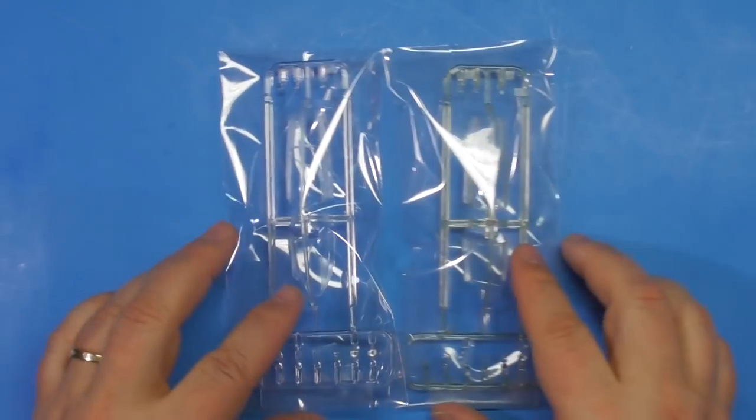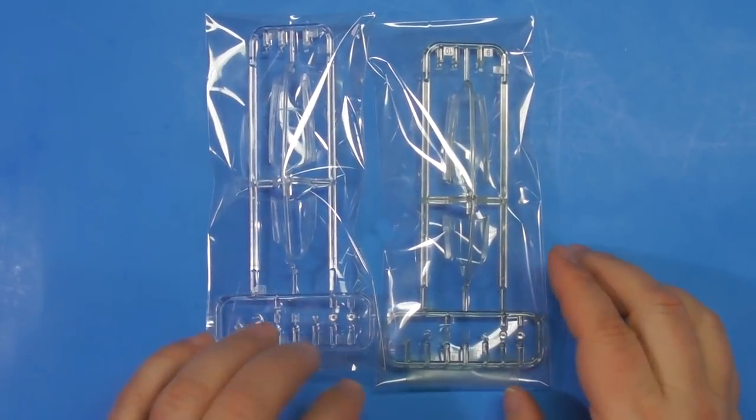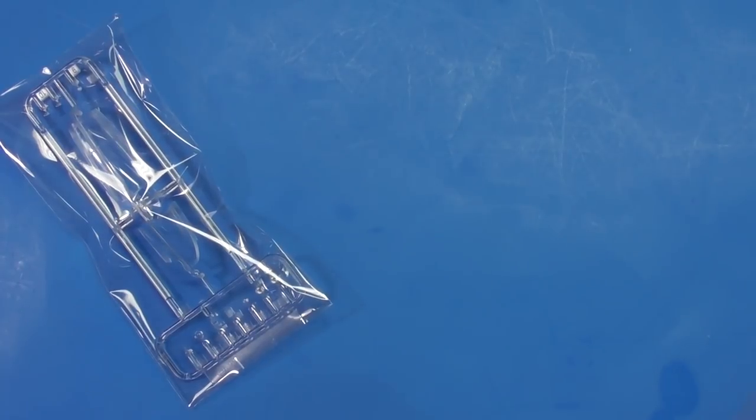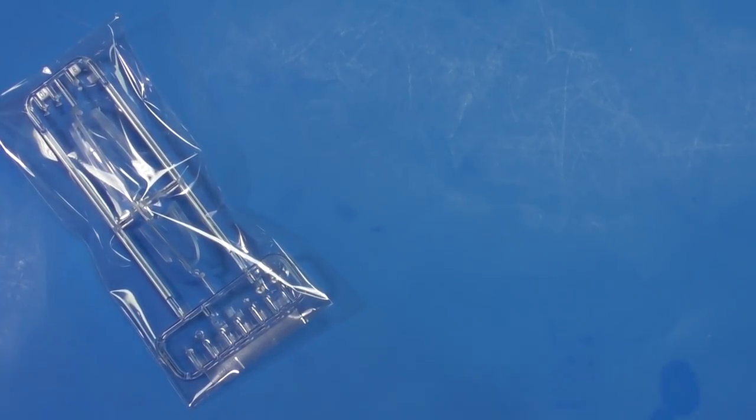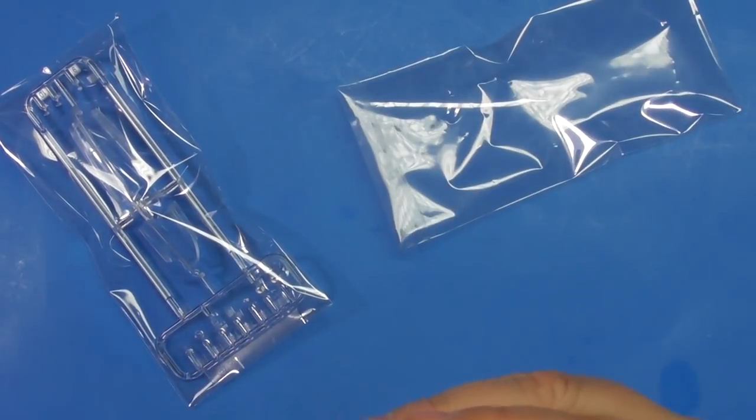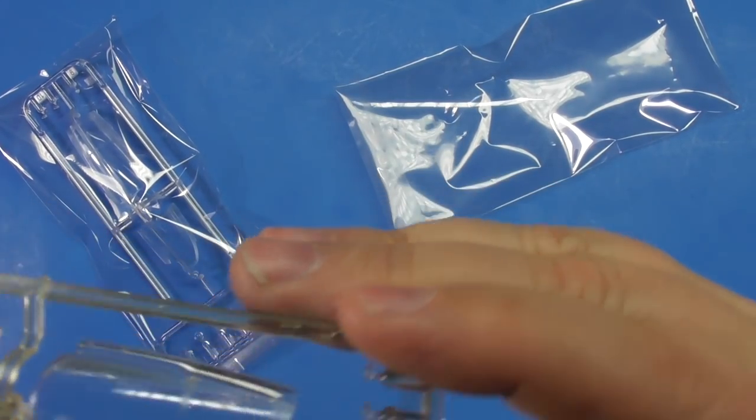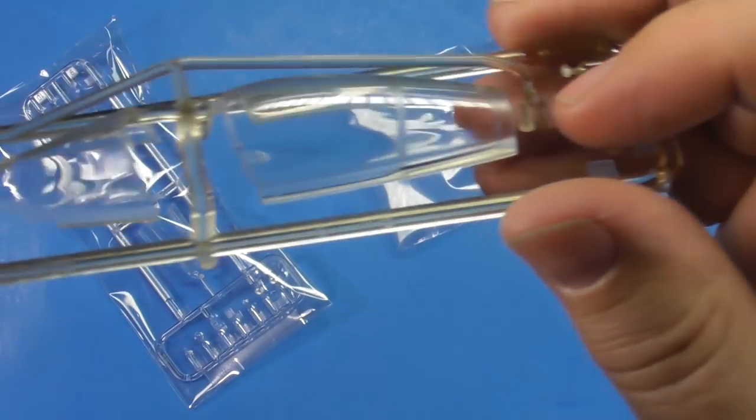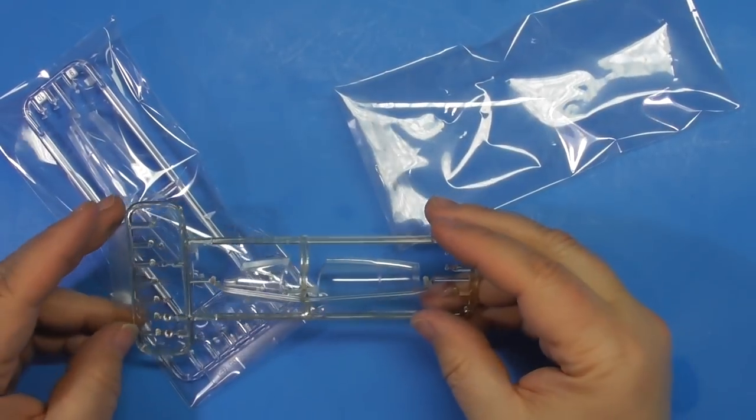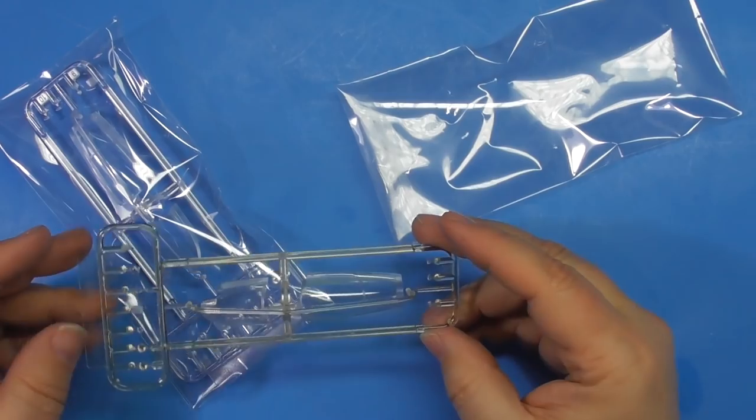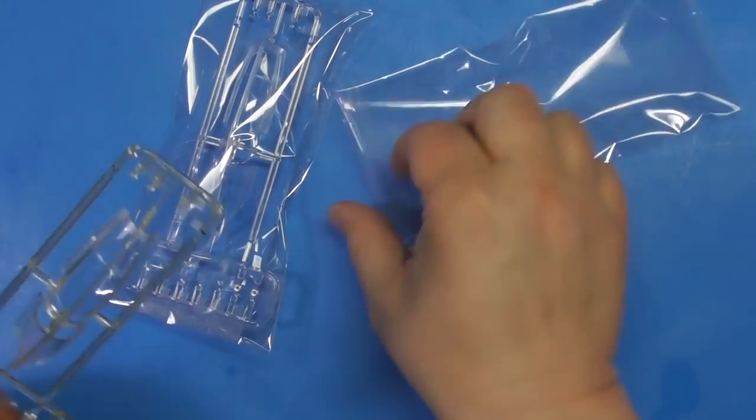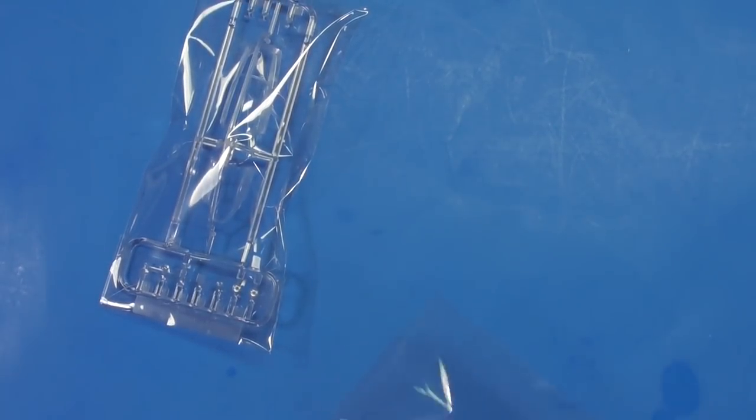Here's the two canopies, the tinted one and the clear one. There is a center seam. You can see that. But they're very clear, no distortion. The other one's going to look just the same, only it's going to be clear. It's nice that they gave you the option. It's nice they take the time to actually tint the canopy.